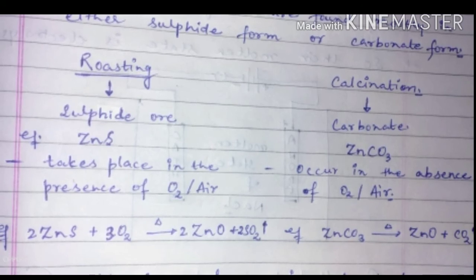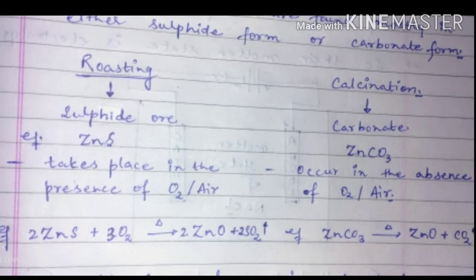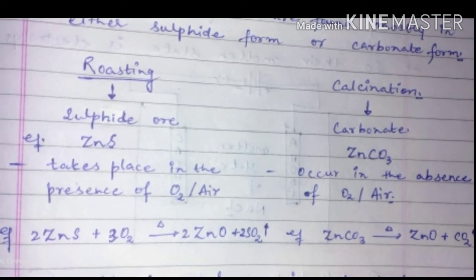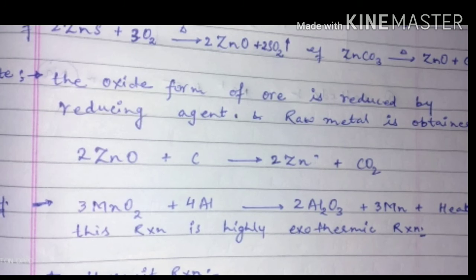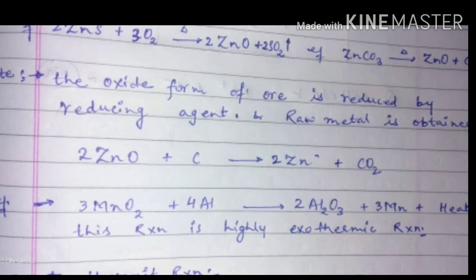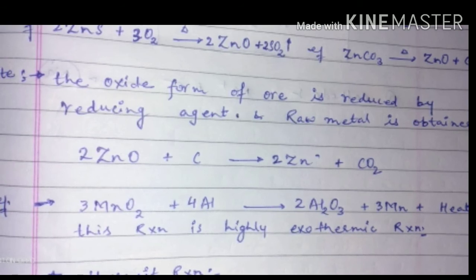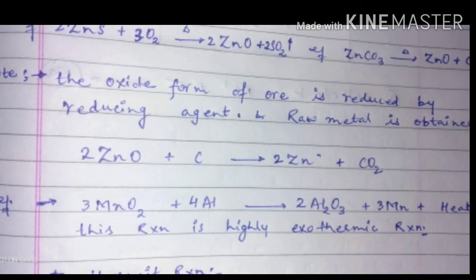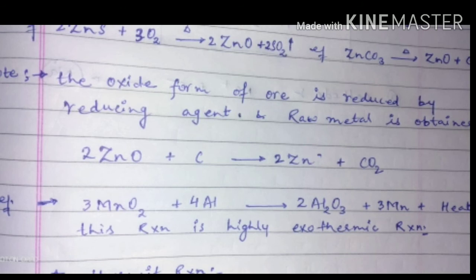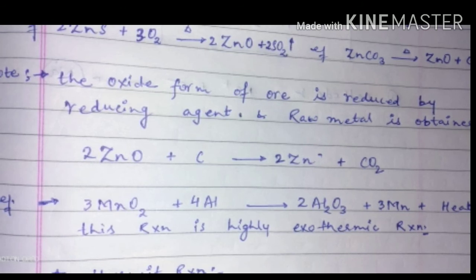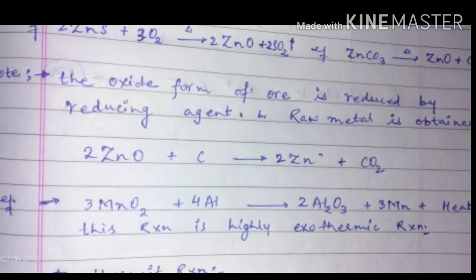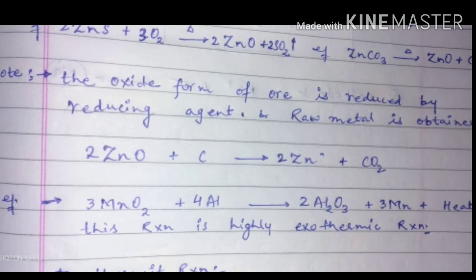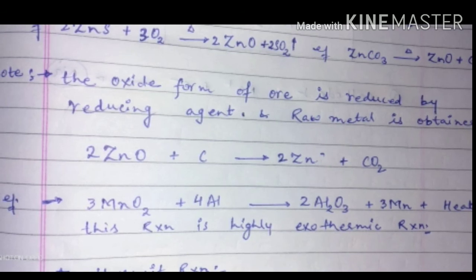For middle reactivity series metals, after getting the metal oxide form we require a reducing agent. This is the key difference from low activity series metals — low activity metals do not require any reducing agent, but middle activity metals require a specific reducing agent to get raw metal from their oxide form. Here, carbon is used as a reducing agent, converting zinc oxide into zinc and carbon dioxide, giving us zinc as the raw metal.